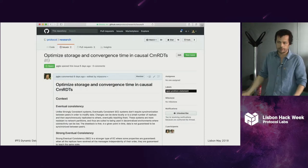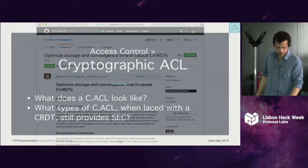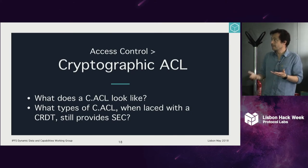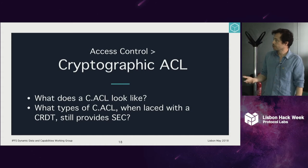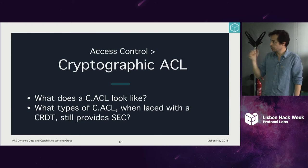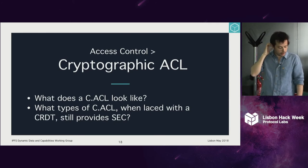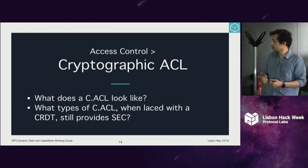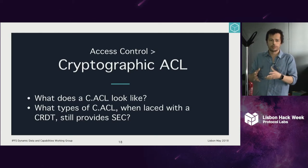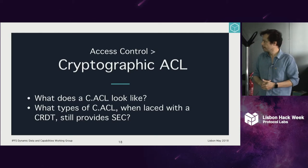There's an associated RFP. The other one is more related to dynamic data, but more about access control of eventually consistent data — how do we create a cryptographic ACL type that still guarantees strong eventual consistency when applied to CRDTs?